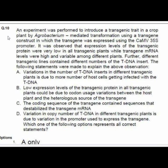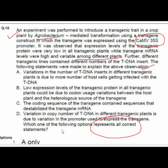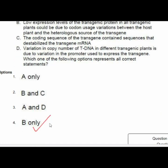Question 10 describes an experiment introducing a transgenic trait in a crop via Agrobacterium-mediated transformation using a CaMV 35S promoter-driven transgene. Transgenic protein levels were very low in all plants while transgene mRNA levels were high and variable, and different lines contained different numbers of T-DNA inserts. Which option represents all correct statements explaining this observation?